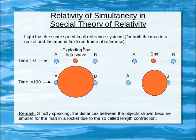We will analyze two situations. In the first situation, an observer at rest looks at an exploding star that is situated halfway between the two planets A and B.